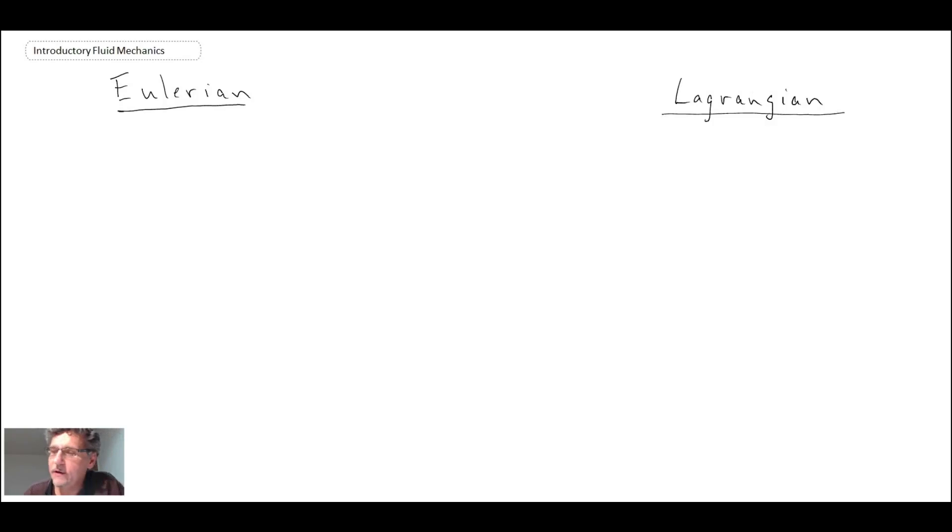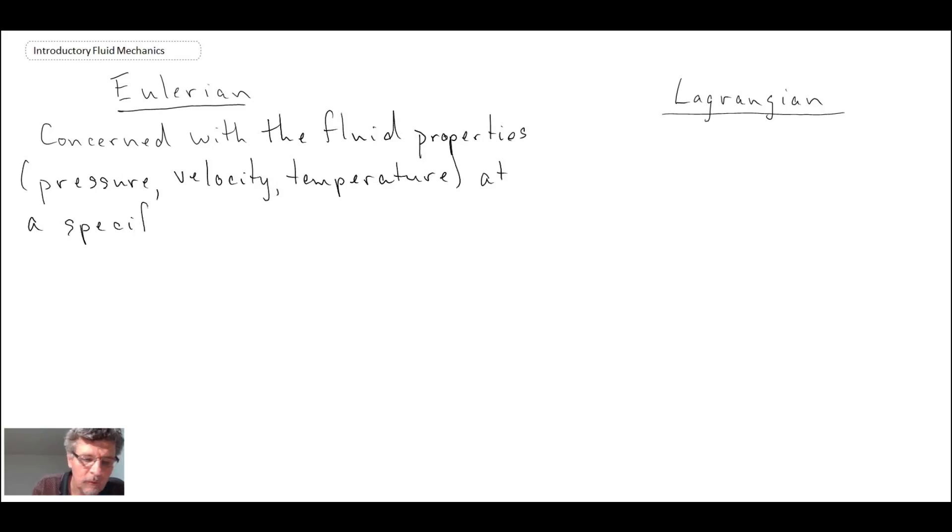So first of all, let's take a look at the Eulerian. And this is typically concerned with fluid properties at a given point within the spatial domain. So that is the Eulerian perspective, and we contrast that with the Lagrangian, which is more concerned with a particular particle as it moves through space and time.